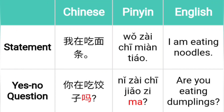How about a full question? The statement is 'I am eating noodles' — 'Wǒ zài chī miàntiáo.' The yes-no question 'are you eating dumplings?' is 'Nǐ zài chī jiǎozi ma?' If you are really eating dumplings, you would say 'Shì de, wǒ zài chī jiǎozi.' However, in this sentence the person is not eating dumplings — instead, he is eating noodles. So the answer would be 'Bù, wǒ zài chī miàntiáo.'